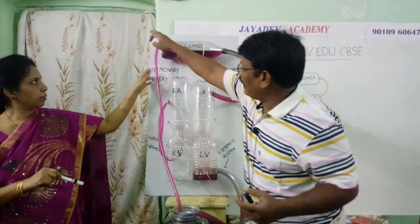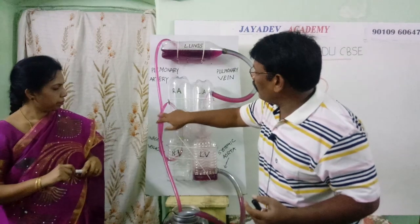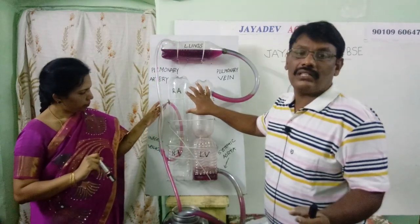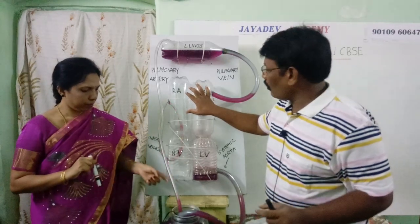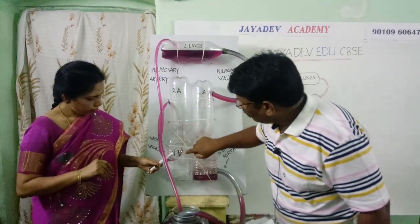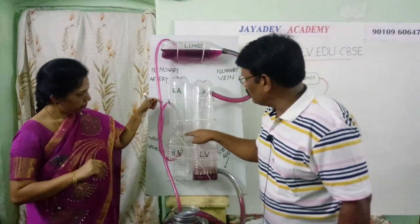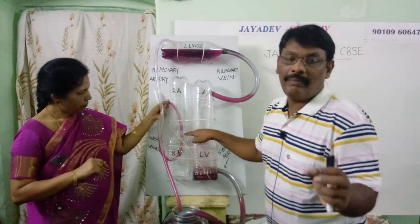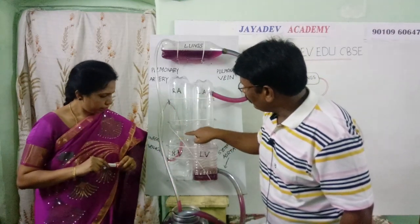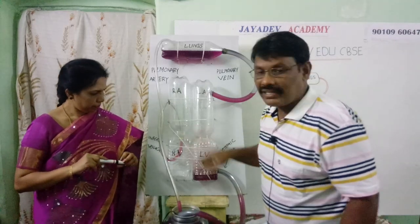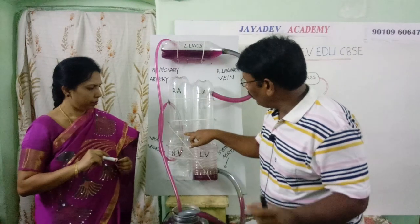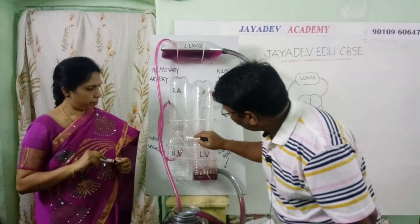Here we have not mentioned about superior venacava, but actually we can mention it. Both inferior and superior venacava are united and they enter into the right auricle. The right auricle receives the deoxygenated blood from various parts of the body. This deoxygenated blood then enters into the right ventricle through one valve. The function of the valve is to prevent the backward movement of the blood. Between right auricle and right ventricle, that valve is called the tricuspid valve.